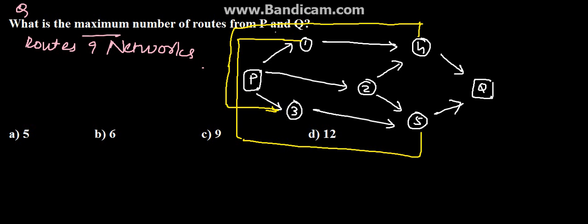what is the maximum number of routes from P and Q? So here we need to find the maximum number of routes from P and Q. The options given are 5, 6, 9, and 12. So here from P to Q,